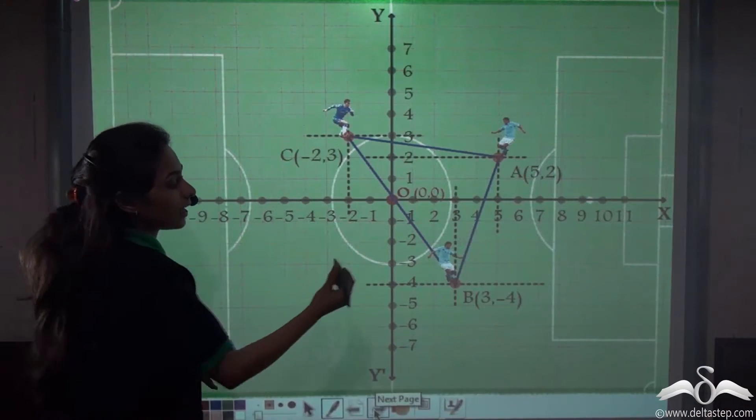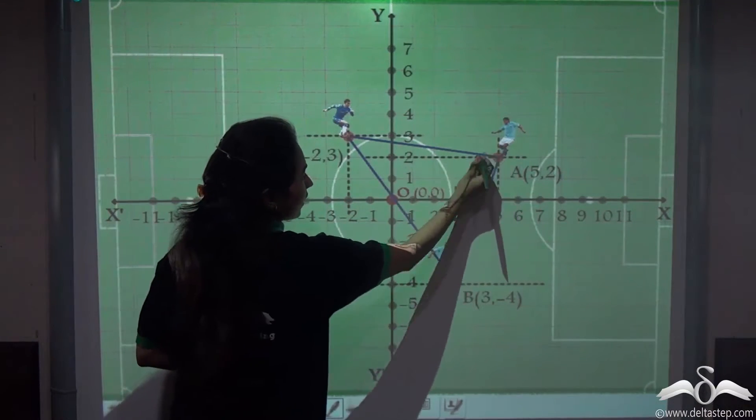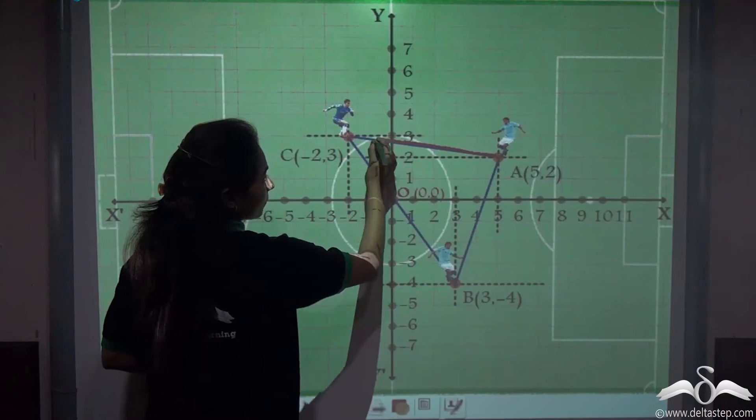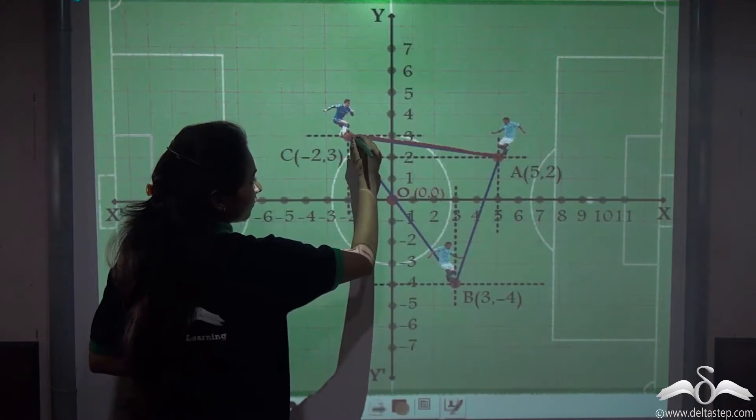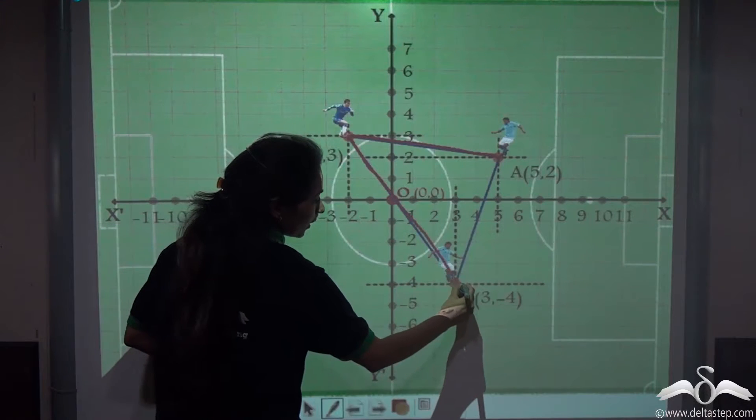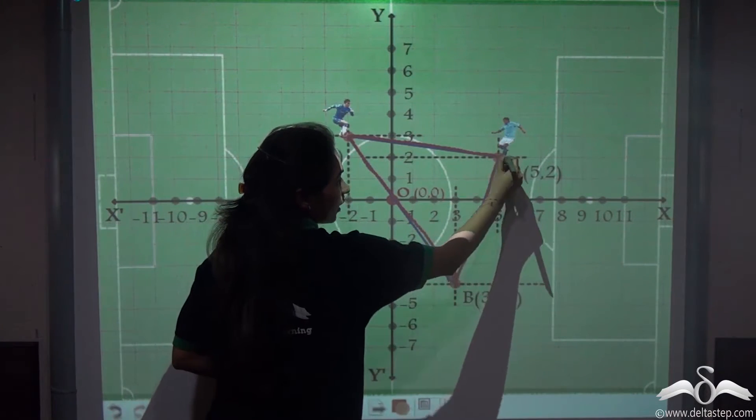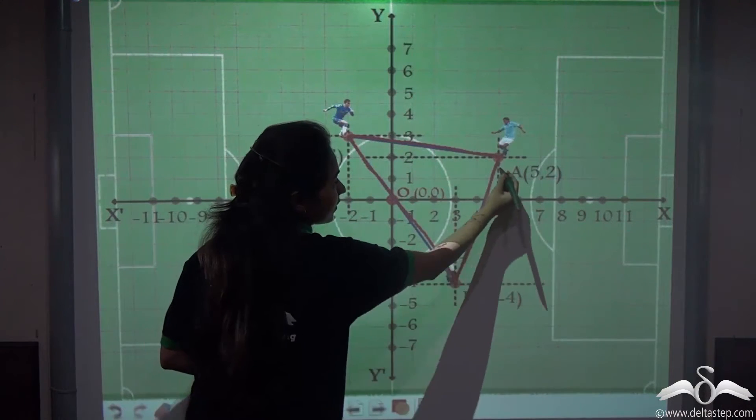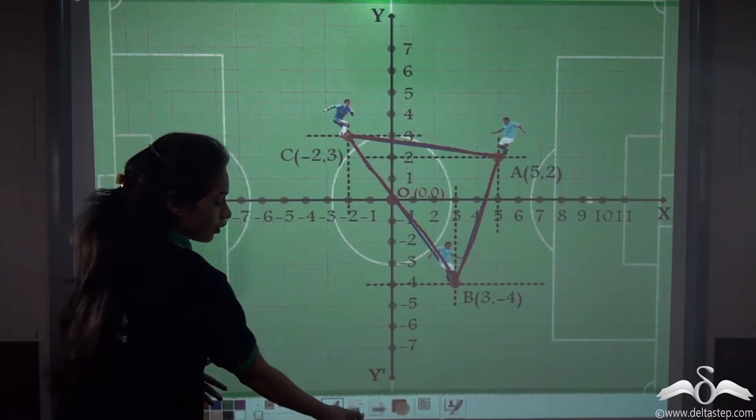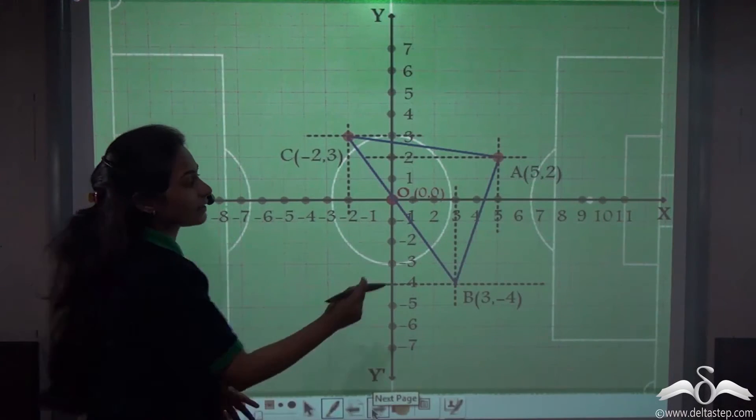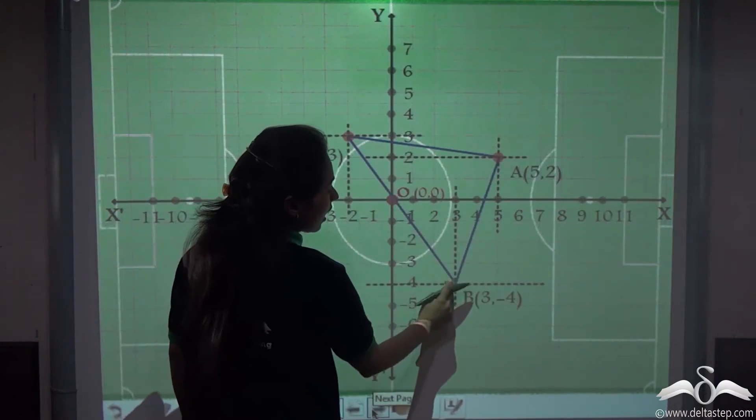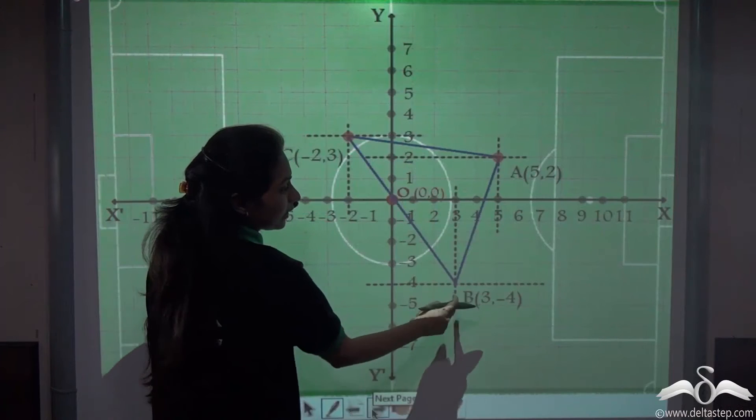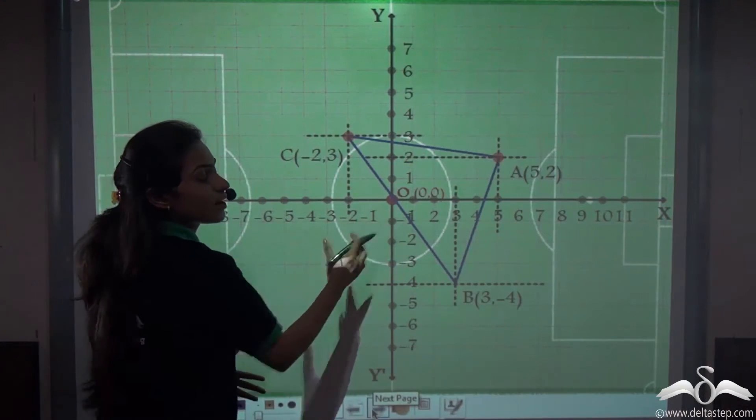You can see that this is the path created by the ball: first from A to C, then C to B, and then from B to A again. Can you tell me what shape this is creating? Well you can see that this is a triangle, and A, B, and C are acting as the vertices of this triangle.